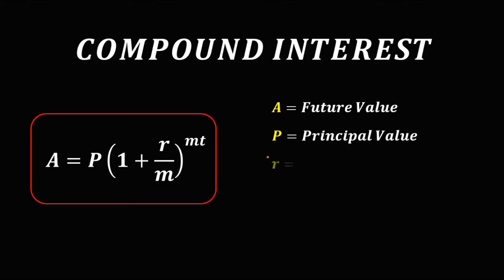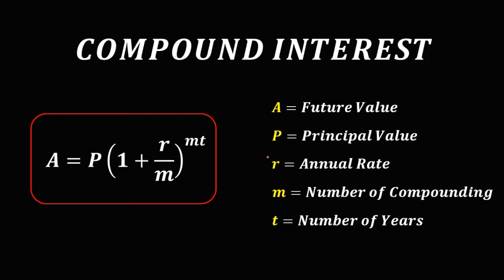P is the principal value. Then R, that's the annual rate. M, that's the number of compounding. And T, that's the number of years.